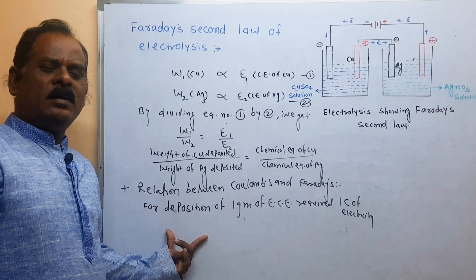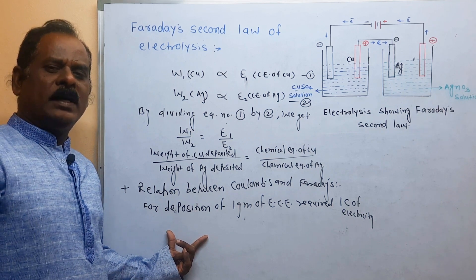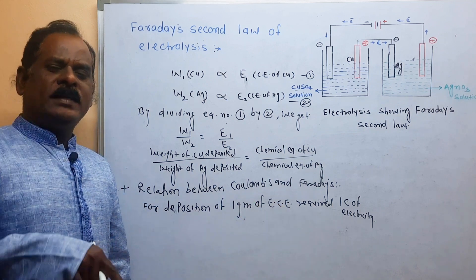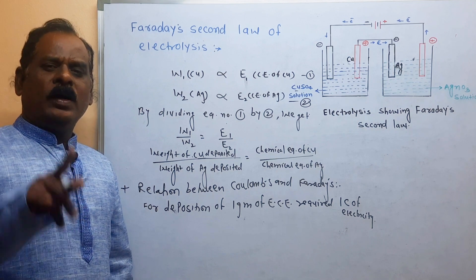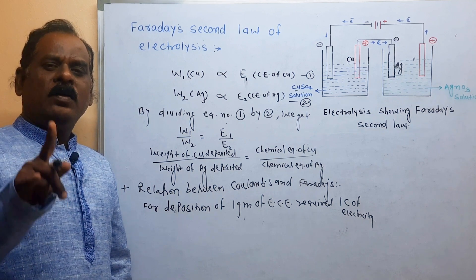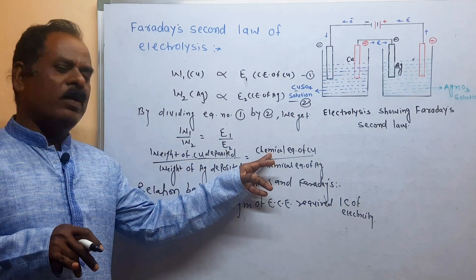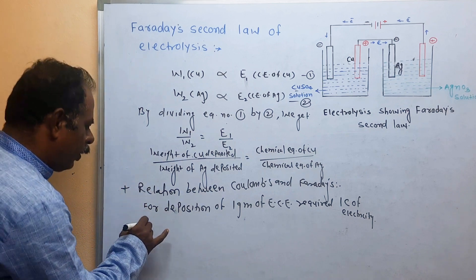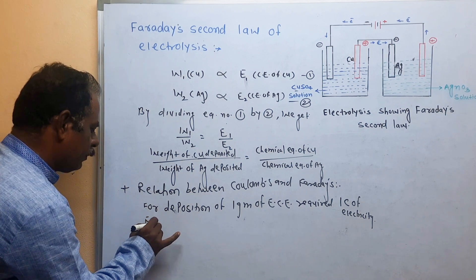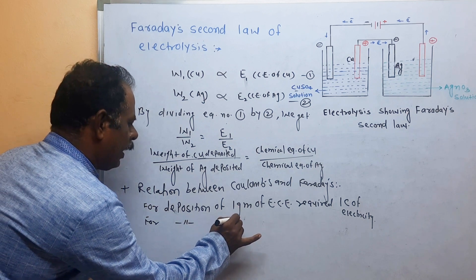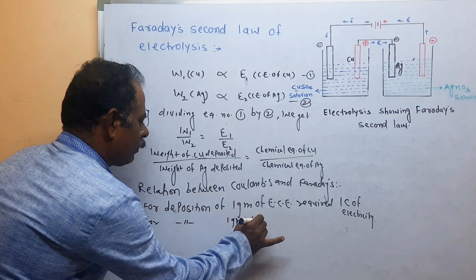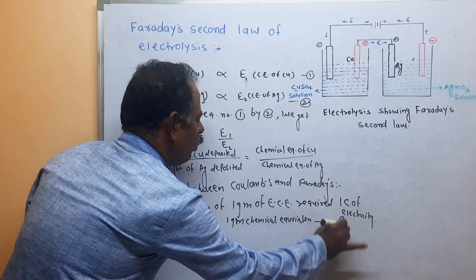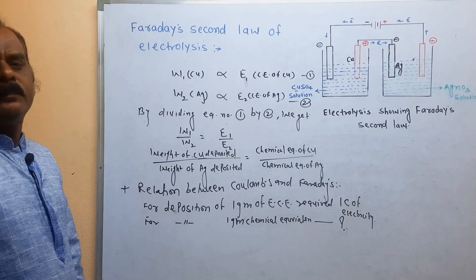When one Coulomb of electricity is passed through an electrolytic solution, the amount of substance deposited on the electrode is called Z, or the electrochemical equivalent (ECE). According to Faraday's second law, if you pass one Faraday of electricity, then one gram of chemical equivalent of substance is deposited on the respective electrode. So for deposition of one gram chemical equivalent, how much electricity is required?